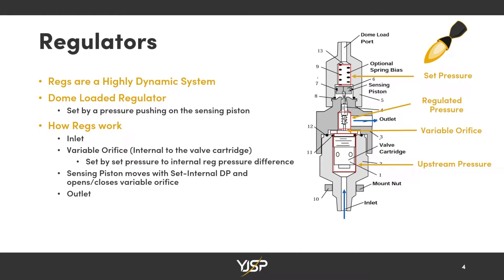So first of all, what is a regulator? Regulators are highly dynamic systems with a lot of internal components moving around. Starting from the beginning: you have the inlet with upstream pressure going into the regulator, then through an orifice which varies in size to regulate the pressure. Whenever the pressure downstream is too high, the orifice will close; whenever it's too low, the orifice will open. That is all controlled by the set pressure and the regulator pressure difference. The sensing piston shifts up and down to allow the regulator to open or close and effectively regulate the downstream pressure.